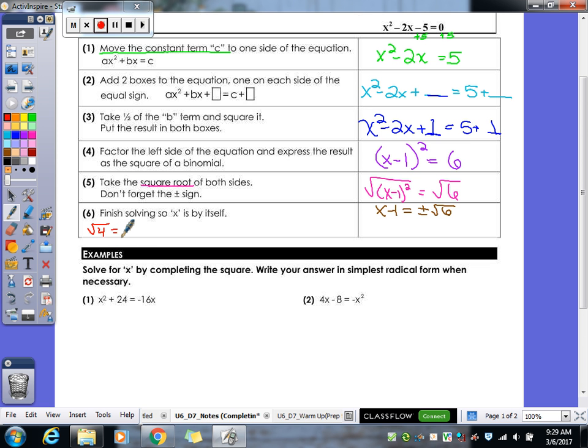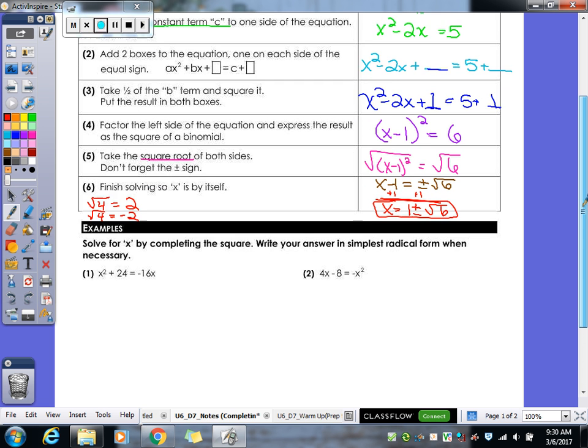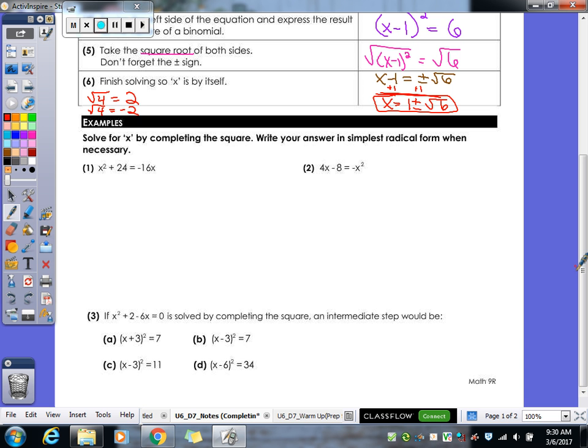Because when you take the square root of a number, you really have two answers. You can either have the positive version of that answer or you can have the negative version. So as a side note, like for 4, it could either be a positive 2 or it could be a negative 2, because negative 2 squared is also 4 and then positive 2 squared gives you a 4. So then our last step, we just got to add the 1 over. So it's 1 ± √6. That's your final answer.